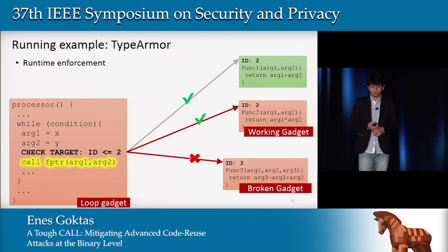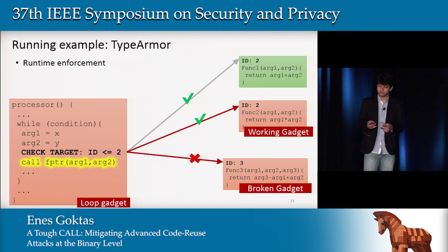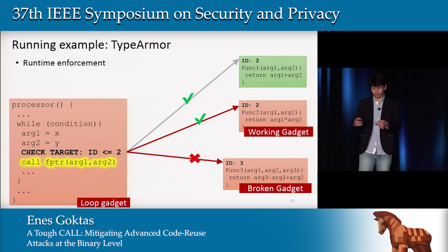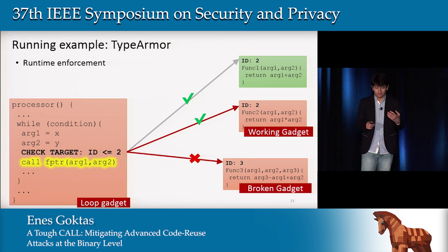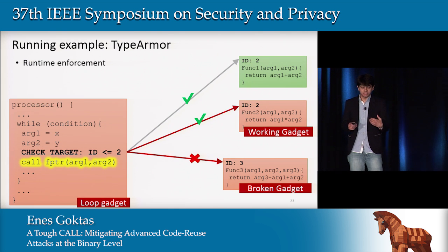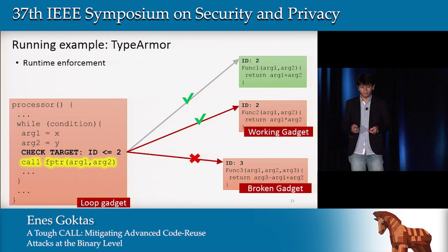Once we have this information, how do we enforce it during runtime? We insert checks before the indirect calls and insert IDs — the expected argument counts — before the function entry points. Once the indirect call is about to execute, it performs the check: it retrieves the ID of the targeted function and checks whether that target ID is less than or equal to its own ID. In this case, the indirect call could go to functions that have 0, 1, or 2 arguments.